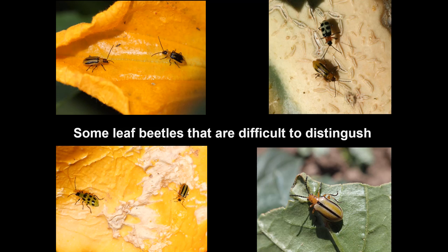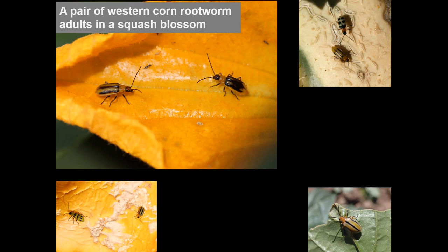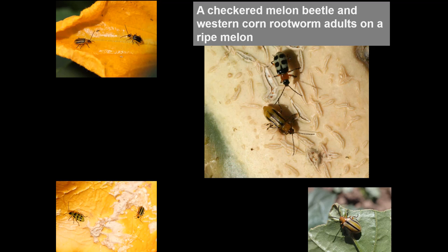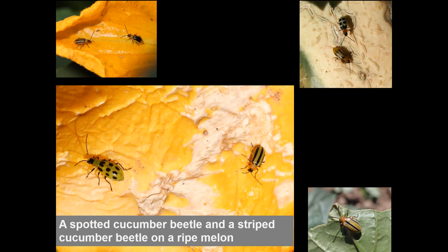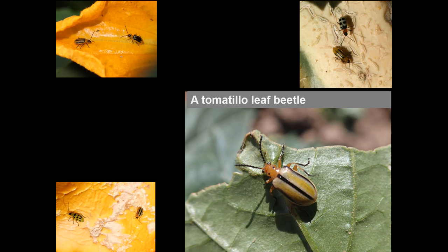These various leaf beetles are all about the same size and can be difficult to distinguish. A picture shows a pair of western corn rootworm adults in a squash blossom — one has more distinct striping than the other, but both are western corn rootworm. Another picture shows a checkered melon beetle on a ripe melon along with a western corn rootworm. A further picture shows a spotted cucumber beetle and a striped cucumber beetle on the same plant. There are also other striped insects, like the tomatillo leaf beetle, so you may need to look closely at this common group of diabrotocene beetles.